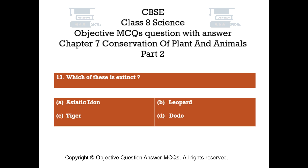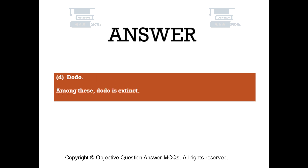Question number 13. Which of these is extinct? Option A Asiatic lion, Option B leopard, Option C tiger, Option D dodo. The right answer is Option D — Dodo. Among these, dodo is extinct.